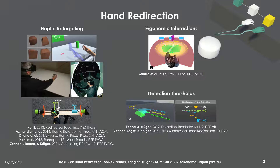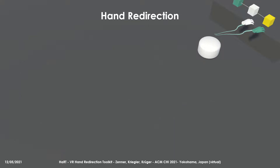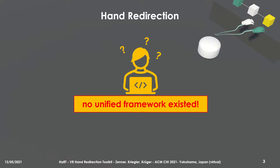Recently, several studies contributed to our understanding of how hand redirection can be employed without users noticing the manipulation by studying perceptual detection thresholds. As a result of previous research efforts, a variety of different algorithms and approaches to hand redirection has been proposed. Despite the increasing interest by researchers and practitioners in the technique of hand redirection, so far no unified framework existed to easily integrate hand redirection in existing VR applications or experiments — until now.